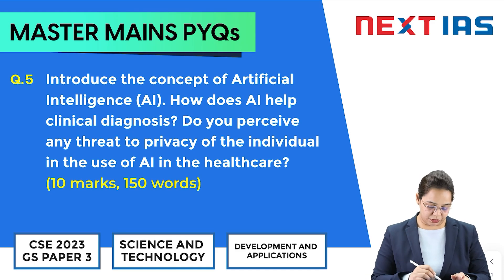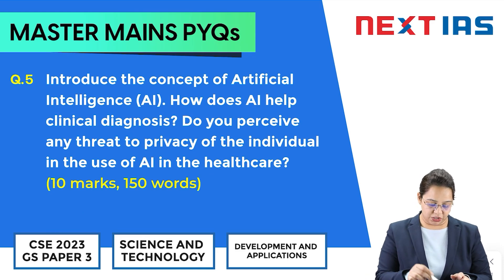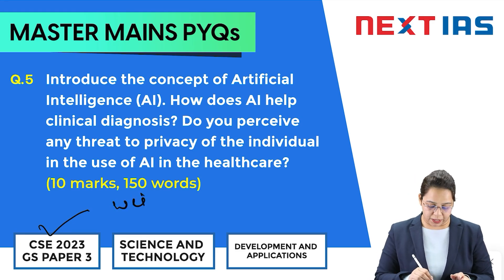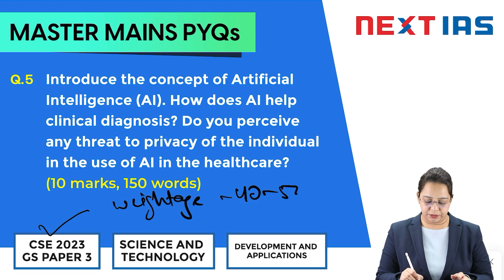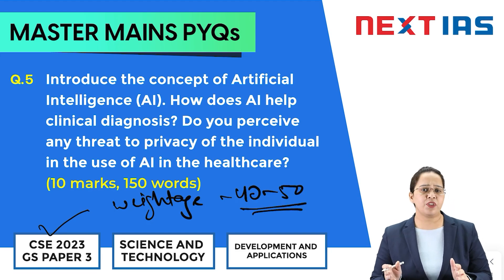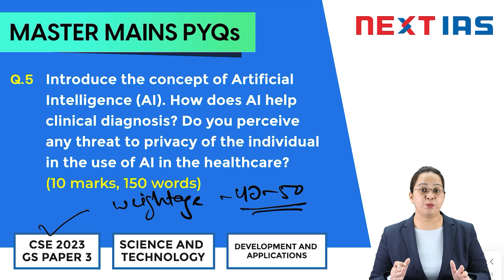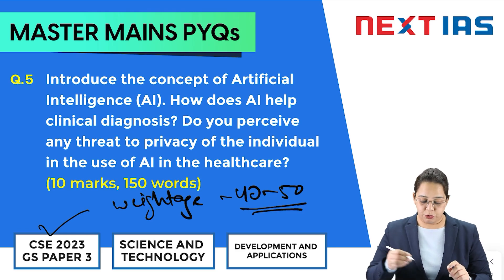Science and Technology is part of your GS Paper 3 of the CSE Mains examination. If you see the weightage of this part, it is usually 40 to 50 marks, which is equal to the weightage of International Relations, Internal Security, and the Environment part. So a decent amount of effort is needed to ace this part.